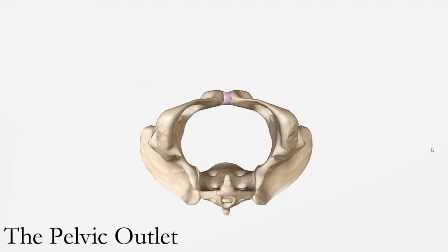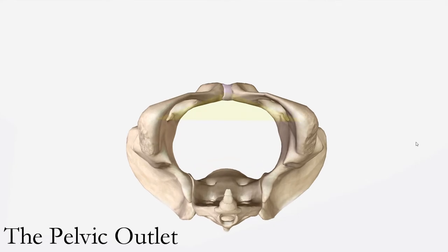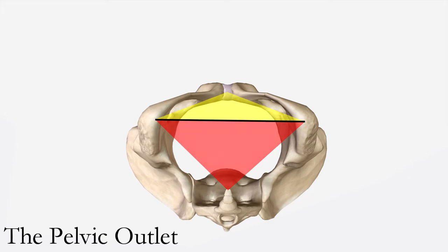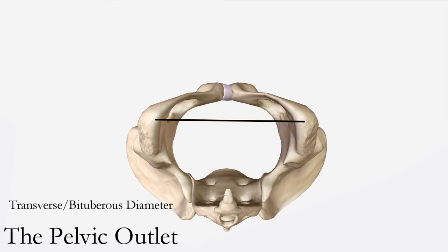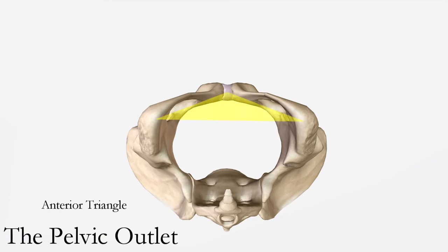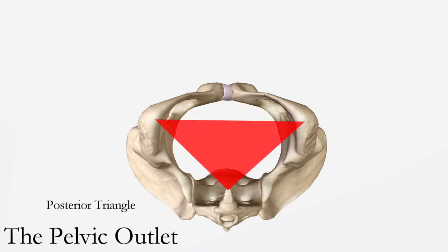The pelvic outlet can be divided into two triangles: the anterior triangle and the posterior triangle. The two triangles share a common base — the line created by connecting the two ischial tuberosities — which also corresponds to the transverse or bituberous diameter of the pelvic outlet. The anterior triangle is drawn from the inferior border of the pubis and the two ischial tuberosities, while the posterior triangle connects the sacrococcygeal joint to the two ischial tuberosities.